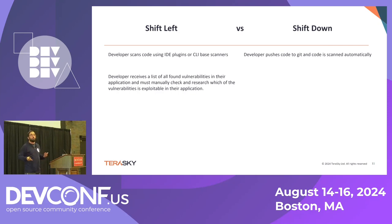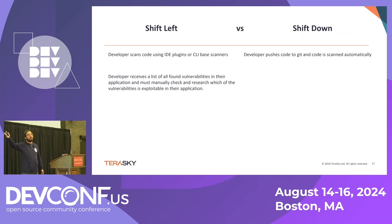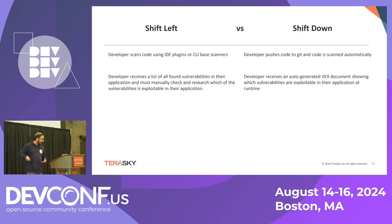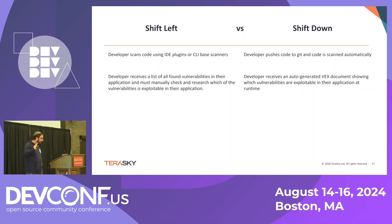In the shift left approach, developers receive a list of all found vulnerabilities and must manually check which are applicable to their application. A great example is Kotlin — I've worked with customers running Kotlin applications on Kubernetes on x86 architecture, but 90% of Kotlin vulnerabilities are relevant only for ARM processors on Android. They end up being blocked from production with 98 critical vulnerabilities when zero are actually applicable. In the shift down approach, developers receive an auto-generated VEX document — the Vulnerability Exploitation Exchange — which identifies what's actually vulnerable based on runtime, what's loaded into memory, and the runtime architecture.